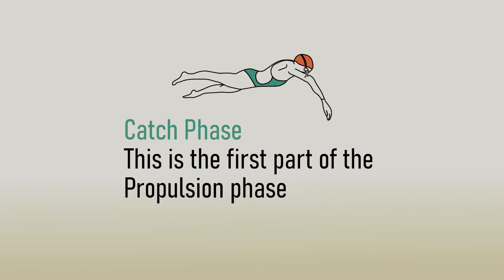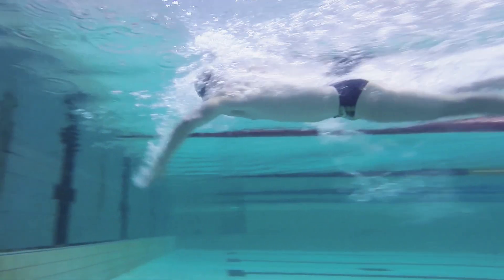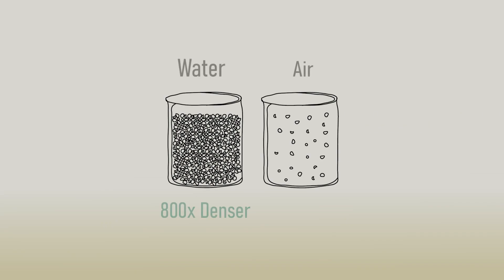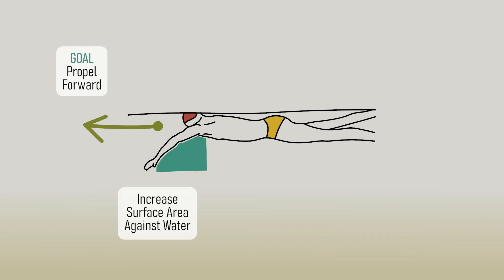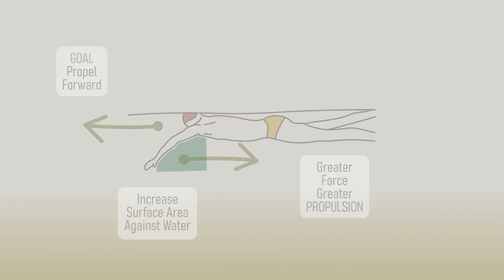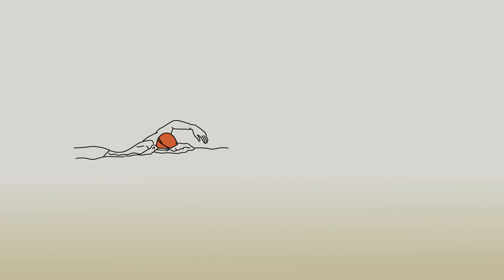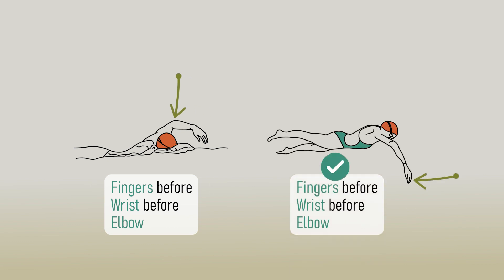The next phase is the catch phase — the first part of the propulsion phase, with the subsequent pull phase providing the second part. Although the catch phase isn't providing the largest part of your forward propulsion, it should provide forward force. Its main objective is to prepare you for the pull phase and start to catch the water. Remember, water is 800 times denser than air, and we can use this density to our advantage. The catch is the most critical phase to master for strongest propulsion. The hand entry sequence of fingers before wrist, wrist before elbow is key to establishing a good catch.